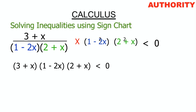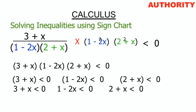Now we take each factor less than zero: (3 + x) < 0, (1 - 2x) < 0, and (2 + x) < 0. Removing brackets: from 3 + x < 0, we get x < -3; from 1 - 2x < 0, we get -2x < -1; and from 2 + x < 0, we get x < -2.